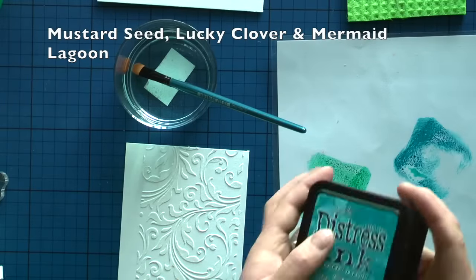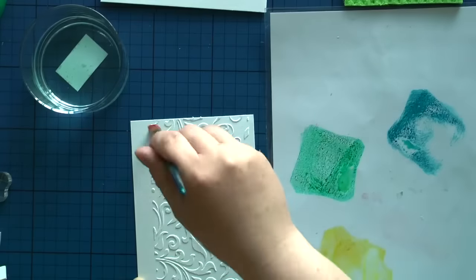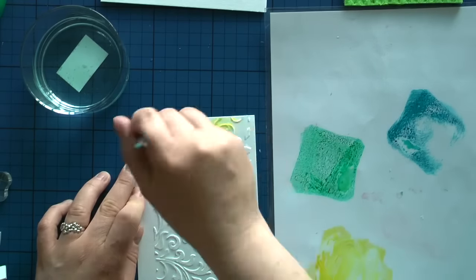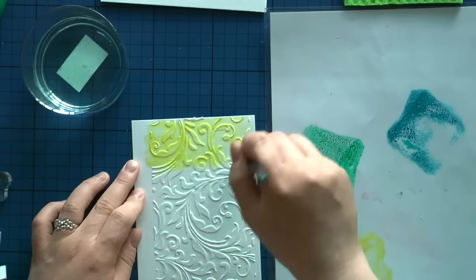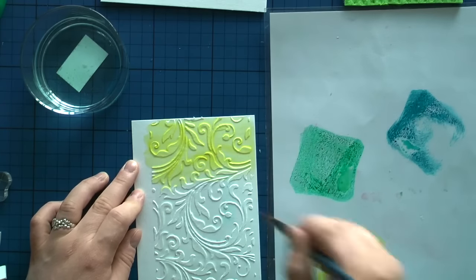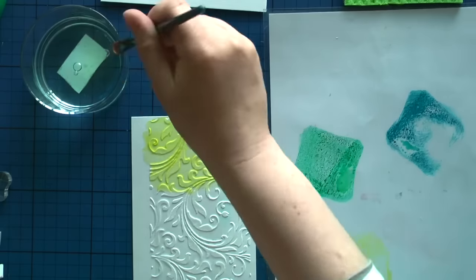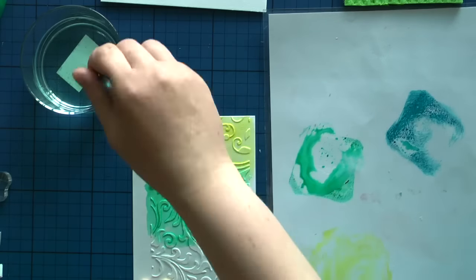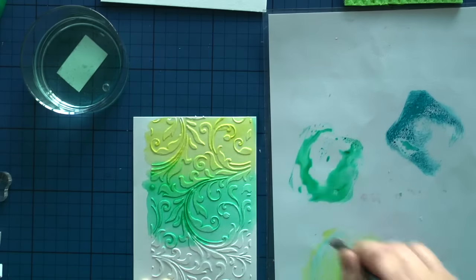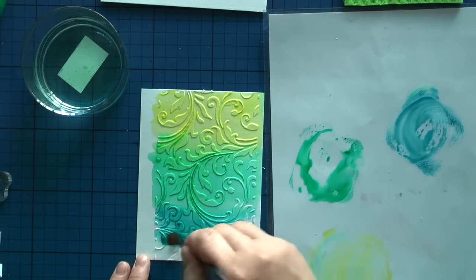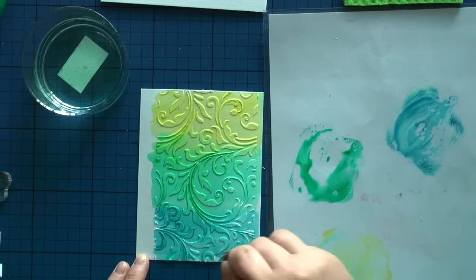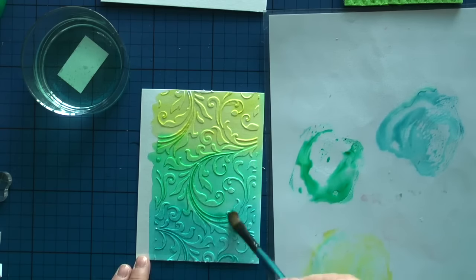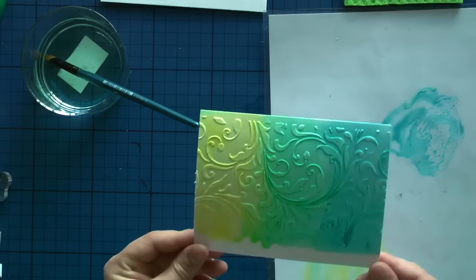Now for the third card, I'll also be using distress inks, but this time as watercolor. I'm going to go over my front panel covered with embossing paste that's already dry with my three colors. I'm using mustard seed, lucky clover, and mermaid lagoon, which will blend nicely as you can see, because they're from the same color family.